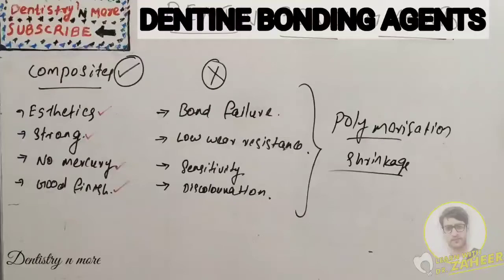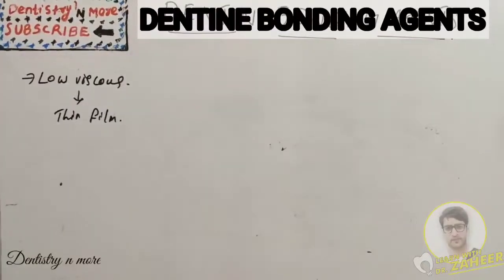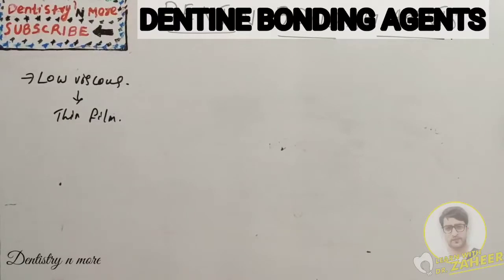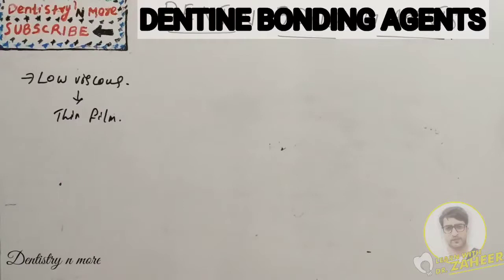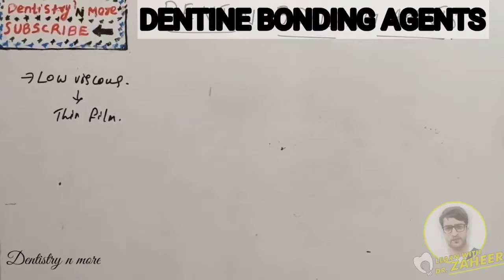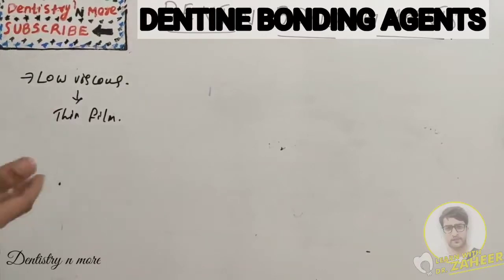As per definition, bonding agents are materials of low viscosity when applied on the tooth surface, which form a thin film after setting. This thin film is strongly bonded to the tooth surface, on which the viscous composite restorative resin is applied, forming an integrated resin. The ideal requirements of a dentin bonding agent: it should be biocompatible, not toxic or irritant, have low film thickness and viscosity, form a permanent bond, have low thermal conductivity, and good shelf life.